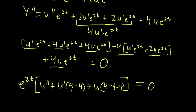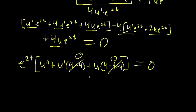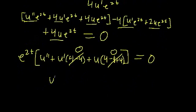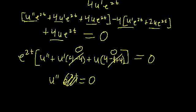We know that 4 minus 4 is 0, and 4 minus 8 plus 4 is also 0. So we're left with just u double prime times e to the 2t equals 0. Since the exponential function can never equal zero, this means it must be because of the u double prime term — so u double prime equals 0.